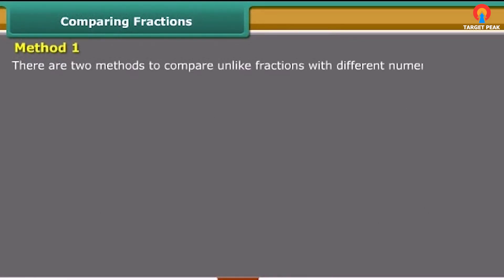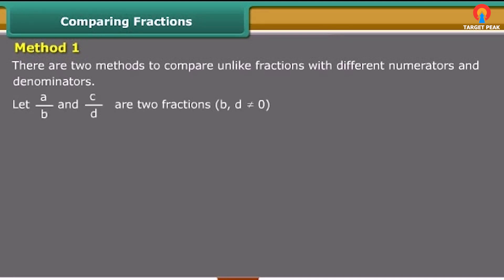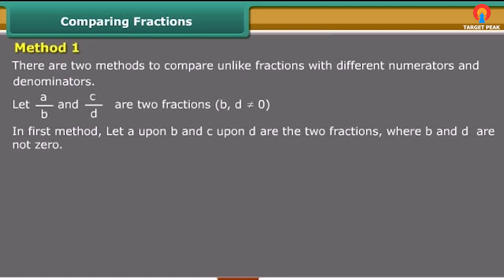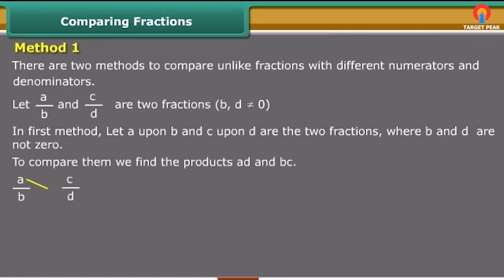There are two methods to compare unlike fractions with different numerators and denominators. In Method 1, let A upon B and C upon D be the two fractions where B and D are not equal to 0. To compare them, we find the products A×D and B×C.